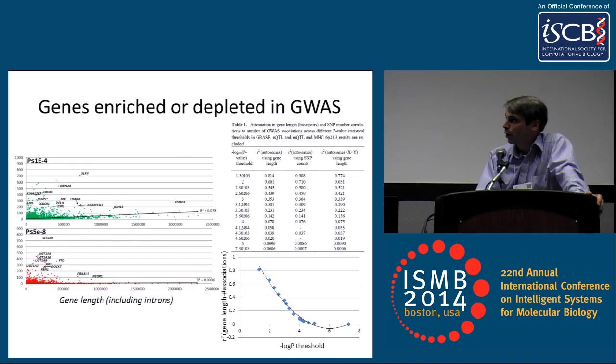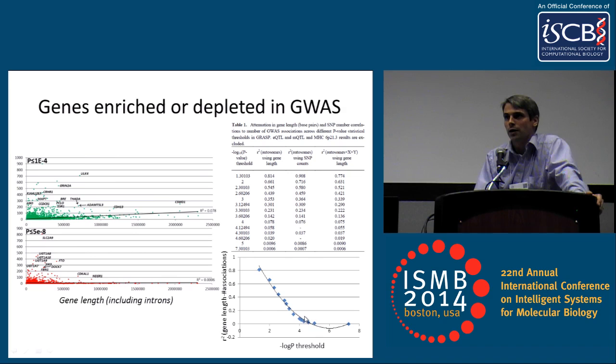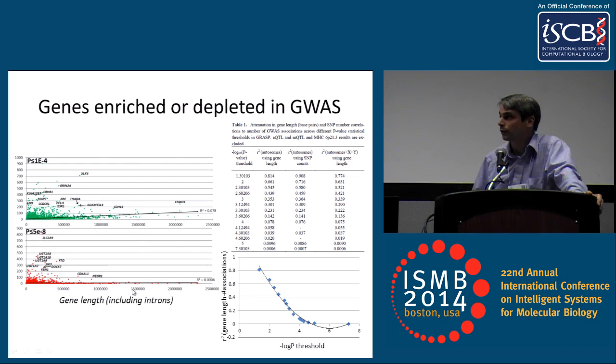We went on to look at how the gene length to number of trait associations correlation decays as we make the p-value threshold increasingly stringent. Essentially, the correlation really begins to decay at a general threshold of about 10⁻⁴ — so this is probably where the prior probability for true positive results really starts to go up. And at a genome-wide significant threshold, there's essentially no correlation between gene length and the number of traits associated in a particular gene.